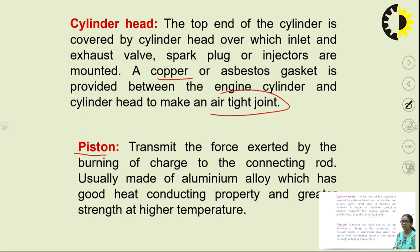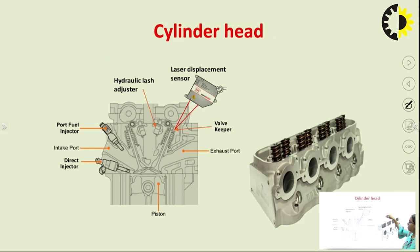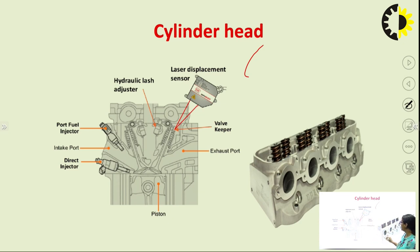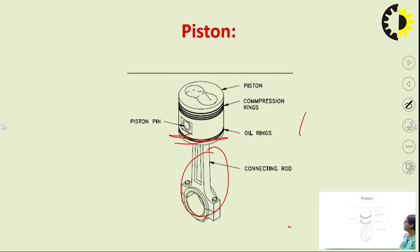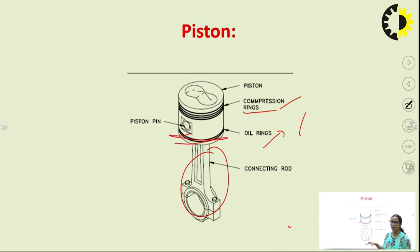The piston transmits the force exerted by the burning charge to the connecting rod. It is usually made of aluminum alloy, which has good heat-conducting properties and greater strength at higher temperatures. The piston reciprocates inside the cylinder, and rings are provided on it — compression rings and oil rings. Compression rings prevent leakage from the cylinder to the lower portion of the engine, the crankcase. Oil rings prevent leakage of lubricating oil into the cylinder.